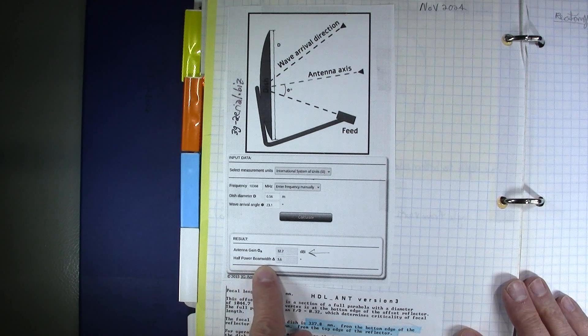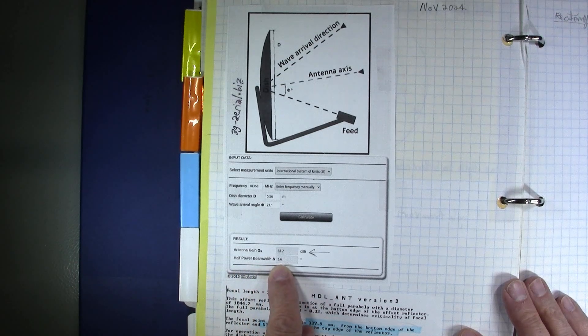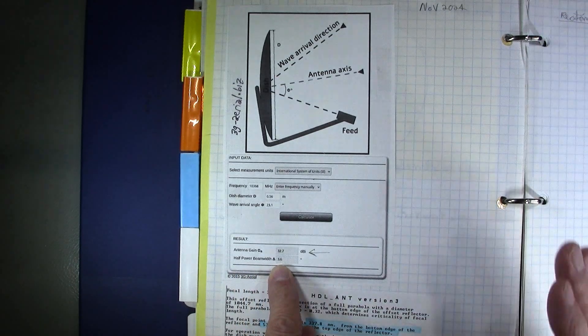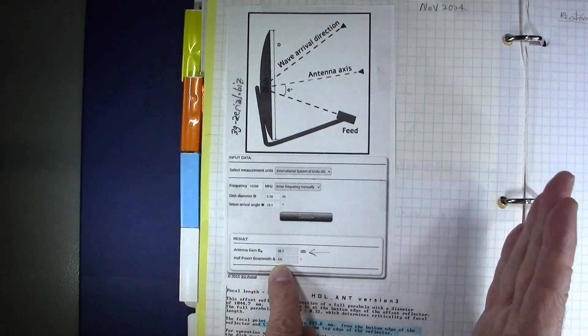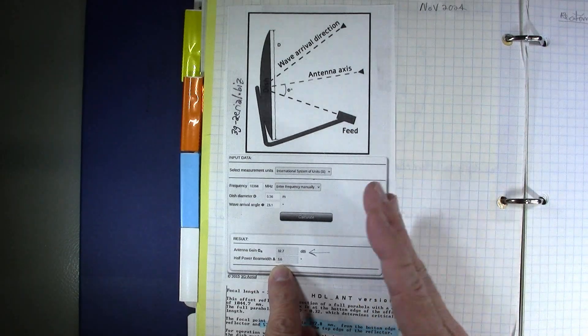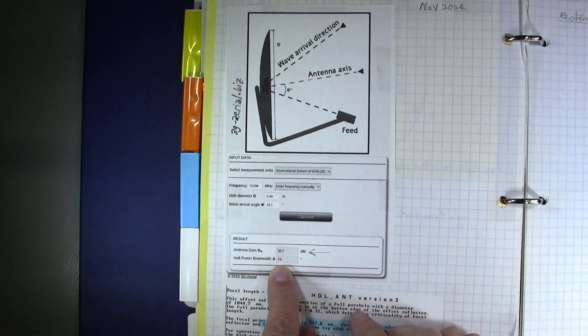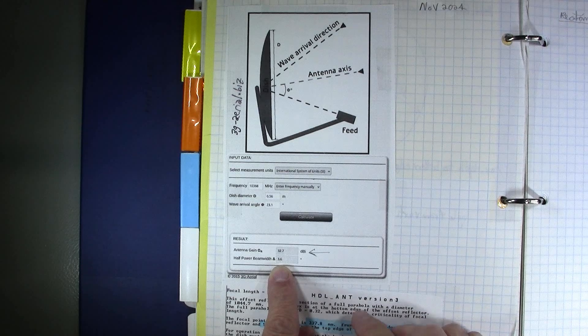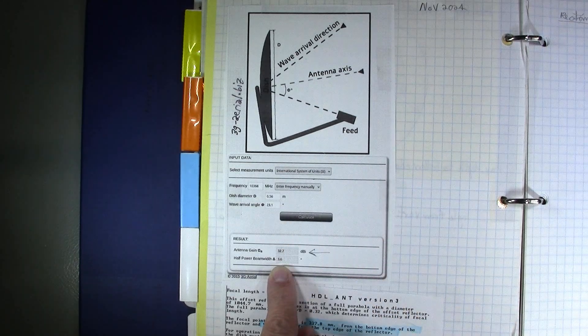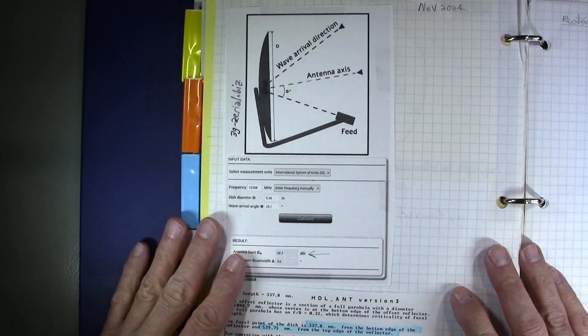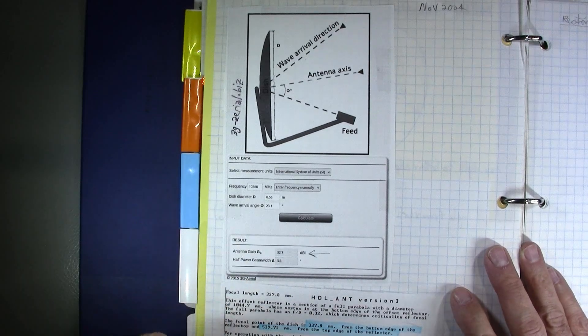And we get a gain of 32.7 dBi, and the half power beam width is 3.6 degrees. So it's not even 2 degrees on each side for the orientation, the aiming, before you lose the signal by 3 dB. So it's a very sharp aiming at 10 gigahertz, and that's why I'm going to need to have an actuator arm to fine tune the aiming.